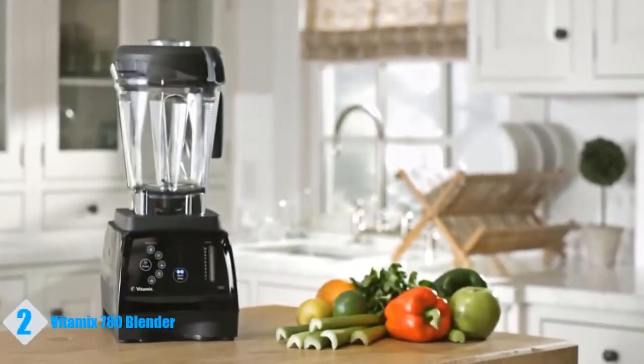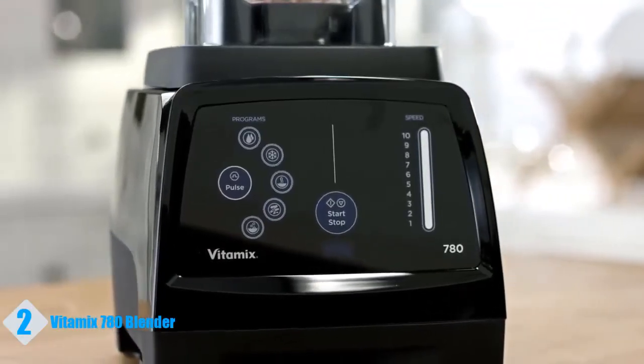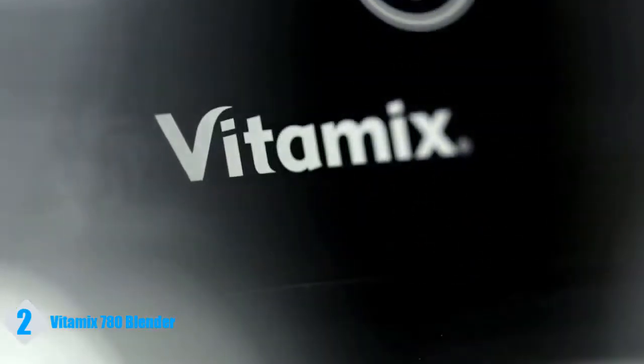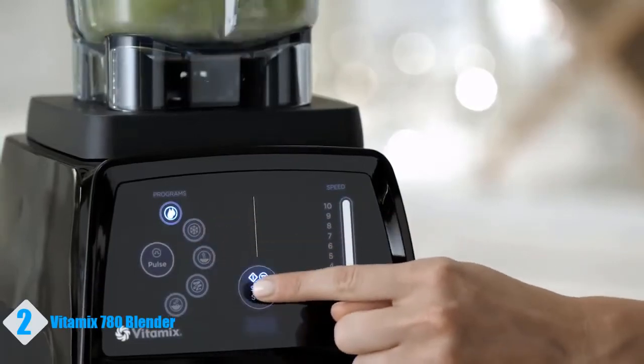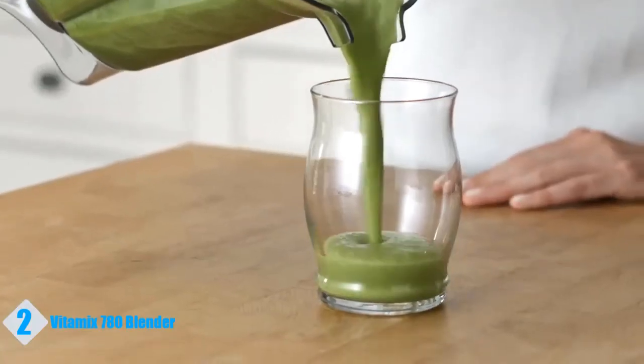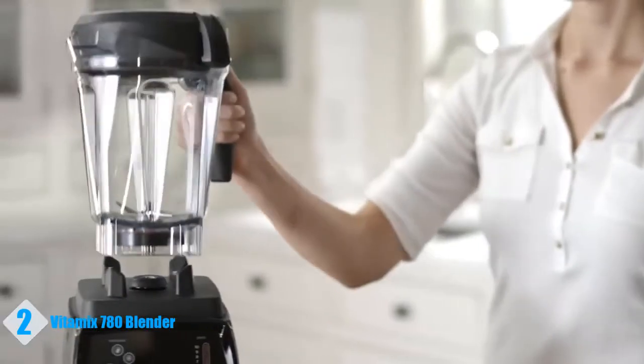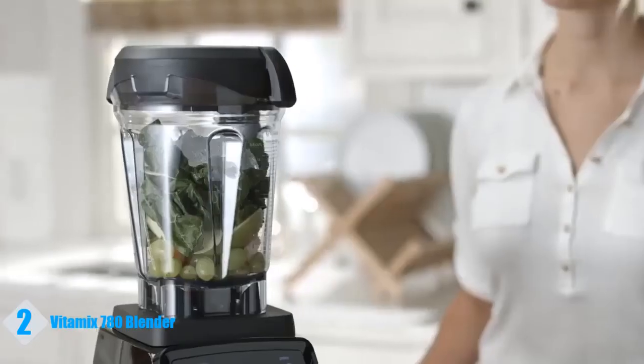Say hello to the all-new Vitamix 780. With a touchscreen control panel that resists scratches and cracks and a sleek modern design, the 780 is your perfect kitchen companion. Choose from five easy program settings as well as variable speed and pulse features to make delicious smoothies, hot soups, frozen desserts, and more. The 780 comes with a low profile 64 ounce container that will hold plenty of the fresh healthy blends you love and fits easily below most cabinets.